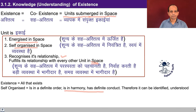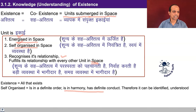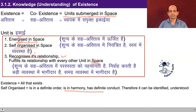You went through this content briefly in the previous course also. Just try to make out whether all these words are clear to you: being energized, being self-organized, and recognizing the relationship. You may not be able to see this clearly at this moment, but you can initiate this process of investigation and exploration, and at some point you may come to a state where you are able to see the whole existence as coexistence — how the units are energized being in space, self-organized being in space, and how they are participating with every other unit being in space.